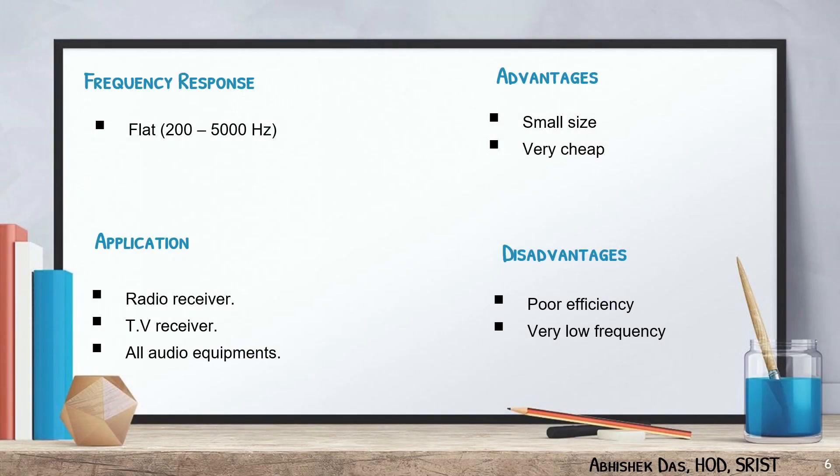The frequency response of the moving coil loudspeaker is flat, and the frequency response range is 200 to 5000 Hz. It has some advantages — they are very small and very cheap. The main disadvantages are poor efficiency and very low frequency response. The main applications are as radio receivers, TV receivers, and all other audio equipment.